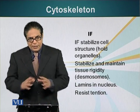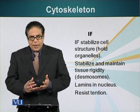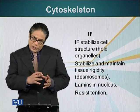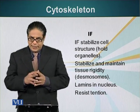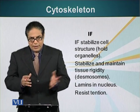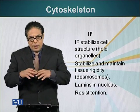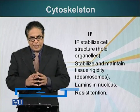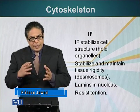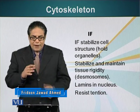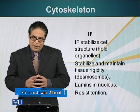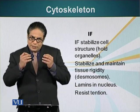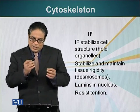Intermediate filaments stabilize cell shape. They also maintain specific locations of some of the organelles inside the cell. Laminins, which I mentioned in one of my previous modules, give the nucleus its shape and also protect the DNA — the genetic material — and they are also a type of intermediate filament. In fact, there are 50 different types of intermediate filaments, and most of them perform one simple function: resist tension.